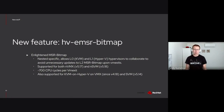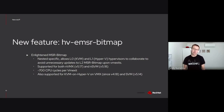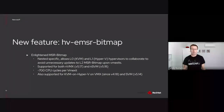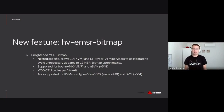The next one is Enlightened MSR Bitmap, a nested-specific enlightenment now supported for both Intel VMX and AMD SVM. The idea is that there is a PV protocol established between level-1 and level-0 hypervisors, where the level-1 hypervisor lets level-0 know every time it updates MSR bitmap structures in memory. This way, level-0 doesn't need to analyze level-1's MSR bitmaps every time it's running a level-2 guest. This speeds things up significantly — in my tests I got around 700 CPU cycles cut with the feature. It should also be noted that this feature is already supported for KVM on Hyper-V.